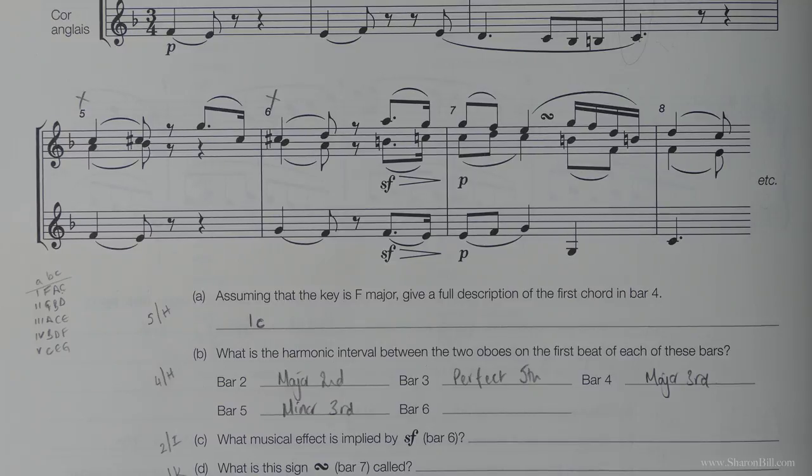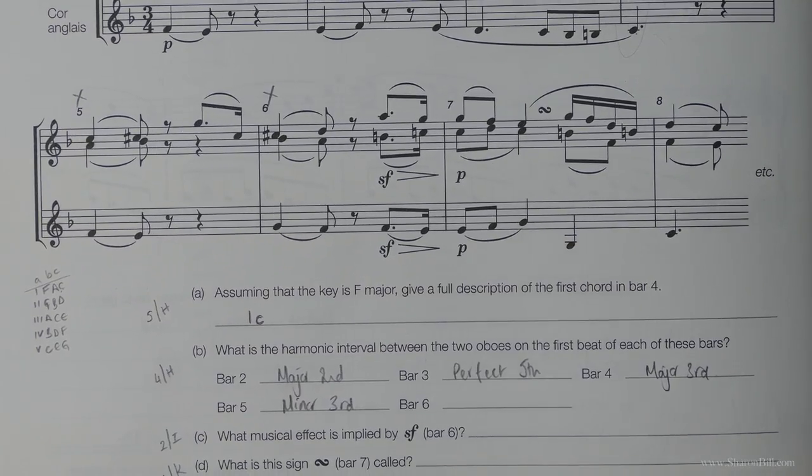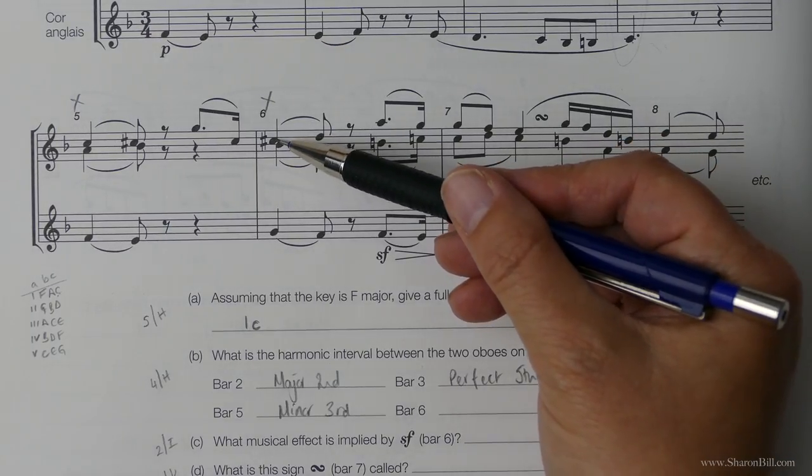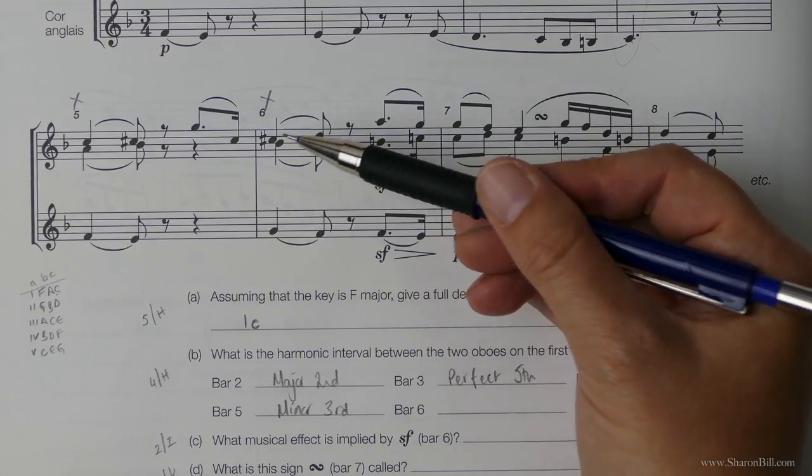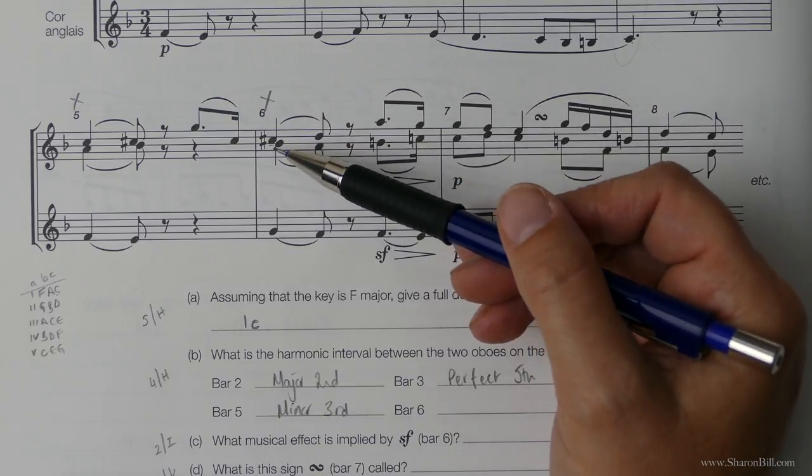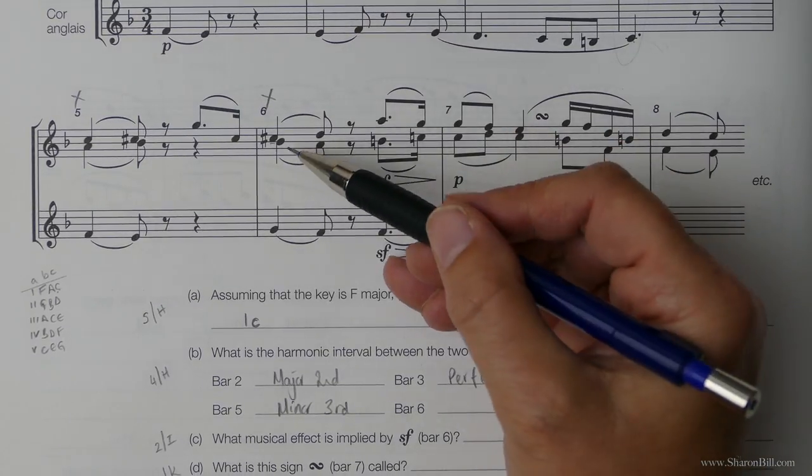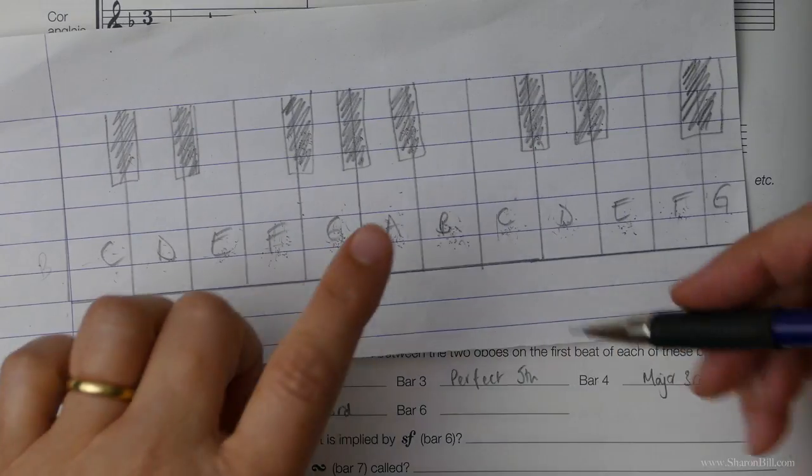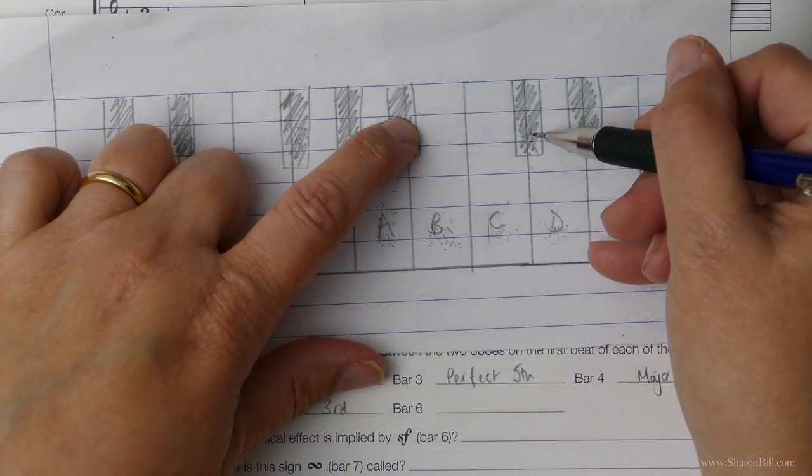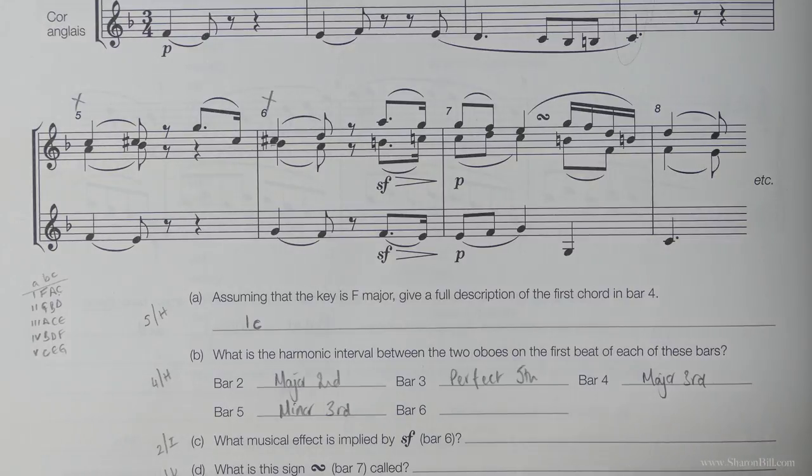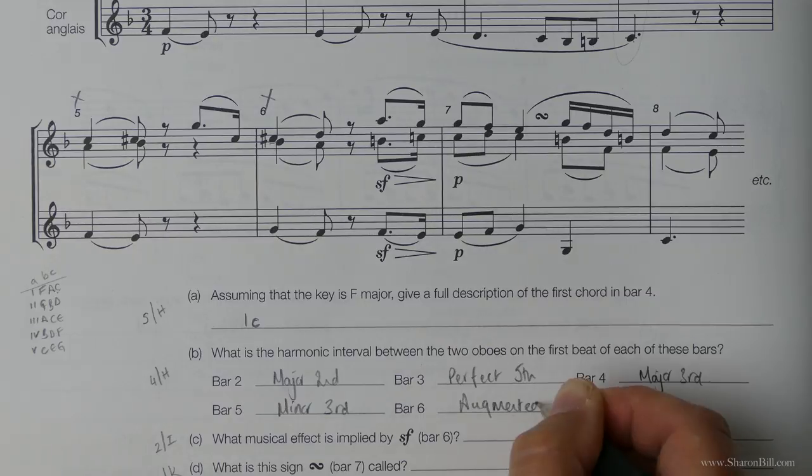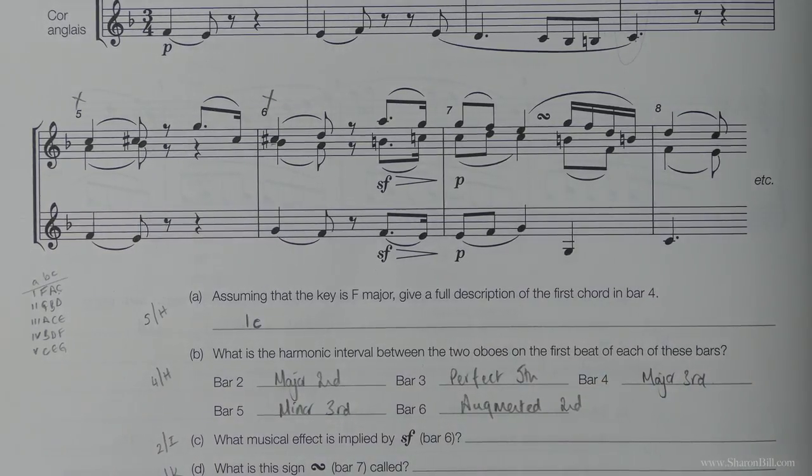And then finally we need to look at bar 6. And so we are here. So we've got a B flat to a C sharp. We've got a 1, 2 of some sort. So B flat to C, we've already discussed that in the first example. We know B flat to C natural is major. And then because the C is sharpened, we've made the major interval larger. And so we've augmented it. And so we know that we've got an augmented second. That's that completed.